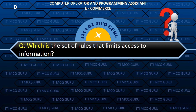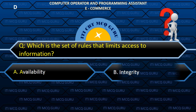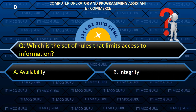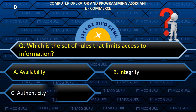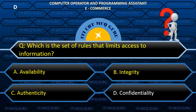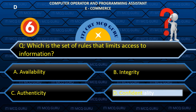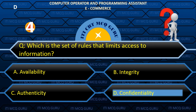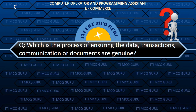Which is the set of rules that limits access to information? D. Confidentiality.